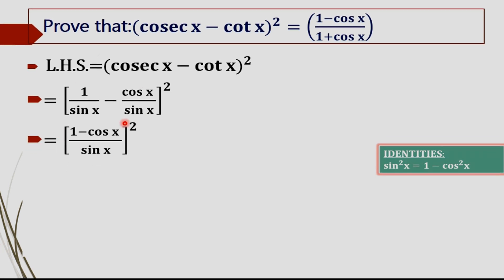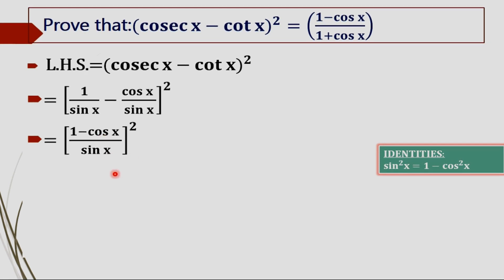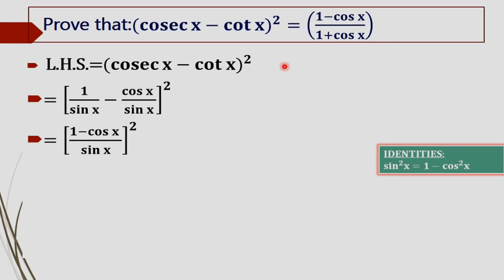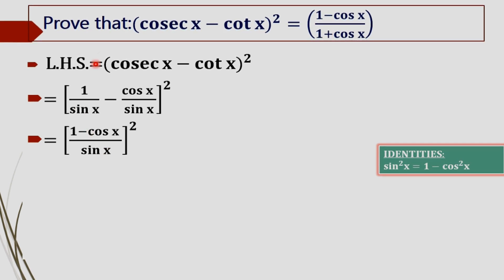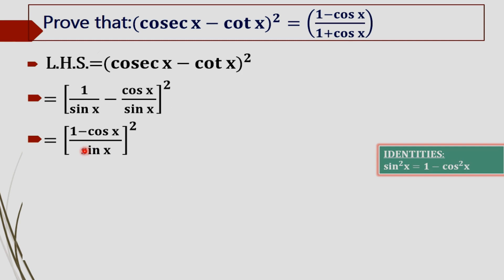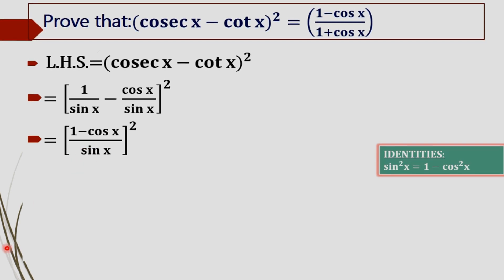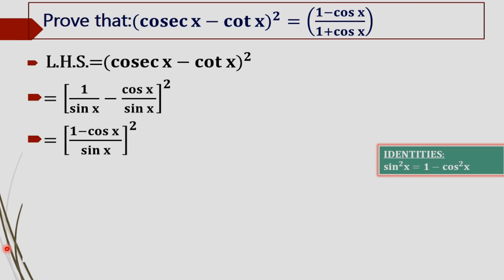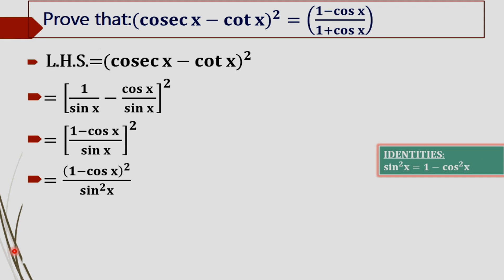Taking the LCM gives us (1 minus cos x) whole divided by sine x, whole squared. Then, squaring the numerator and denominator, we get (1 minus cos x) whole square divided by sine squared x. Now, sine squared x equals 1 minus cos squared x.